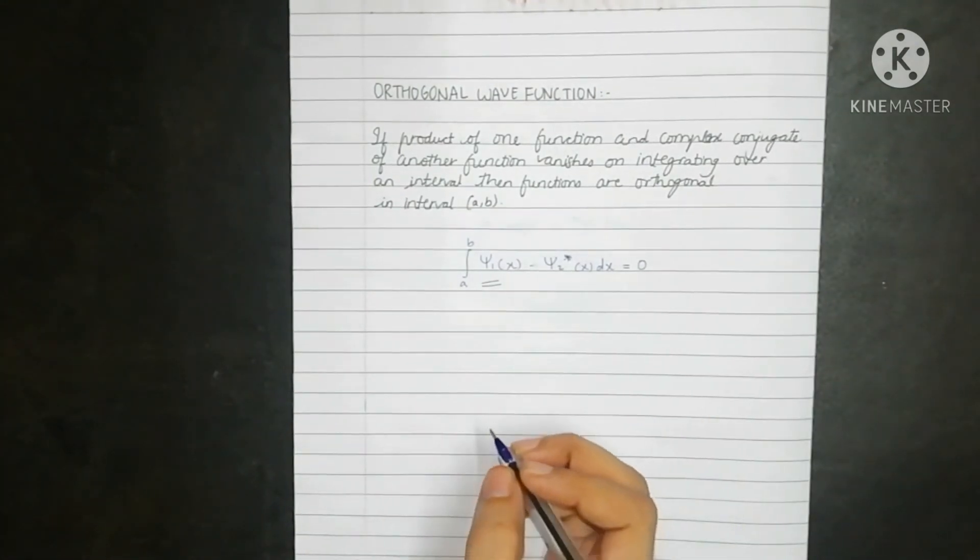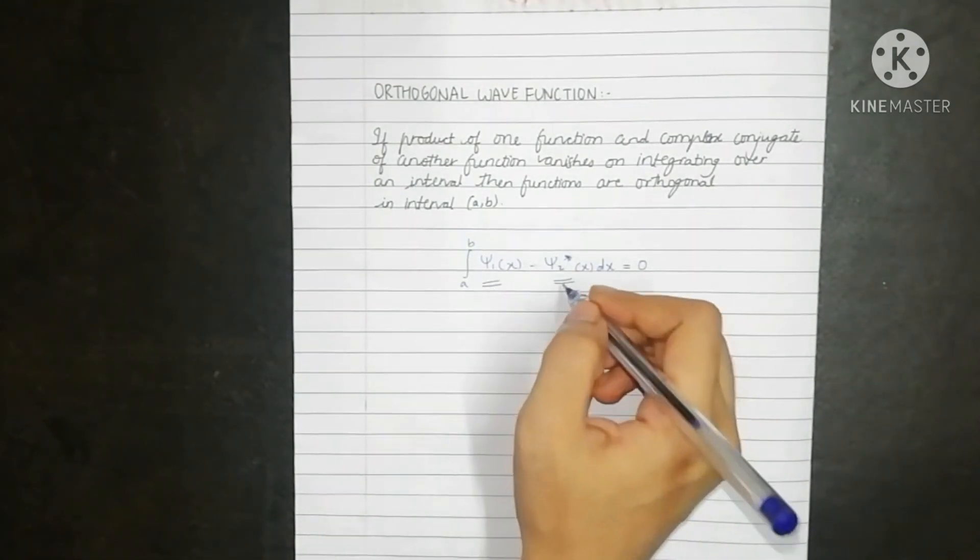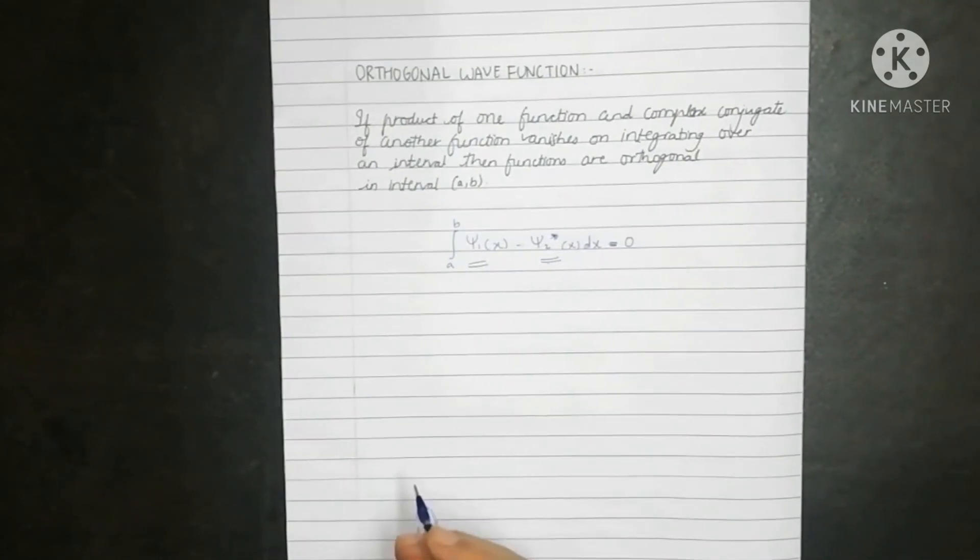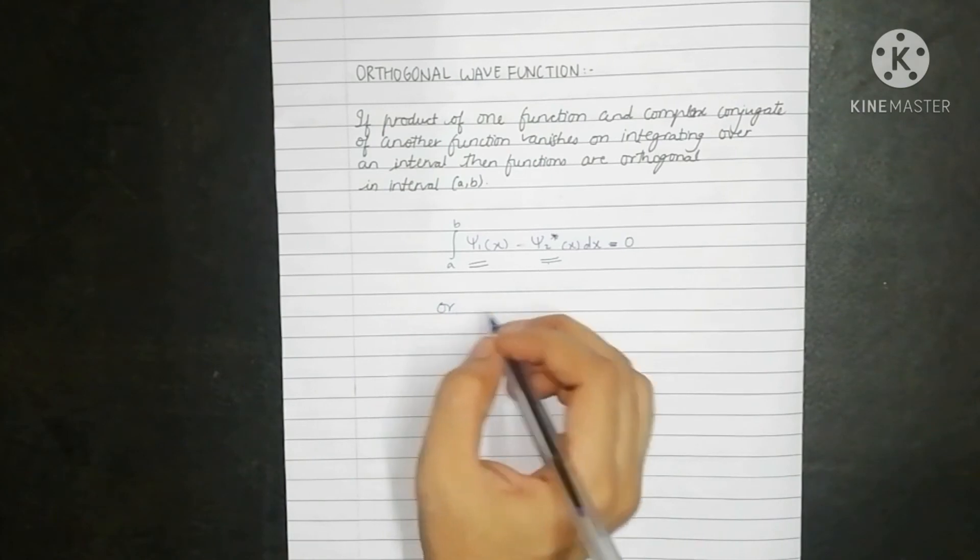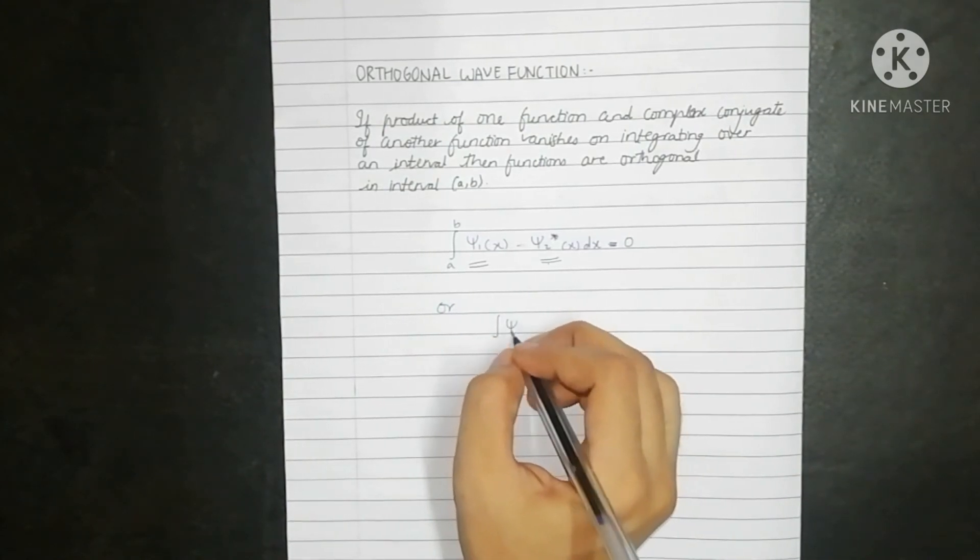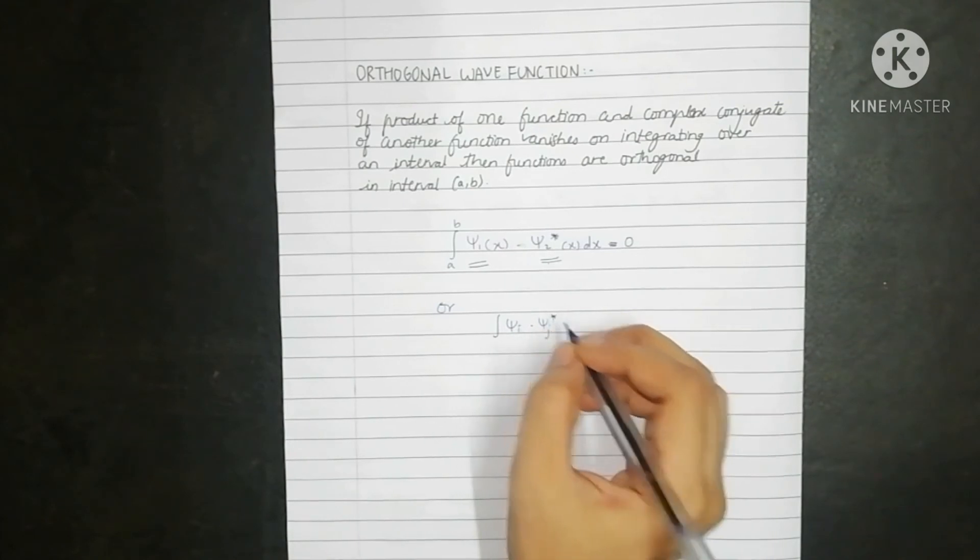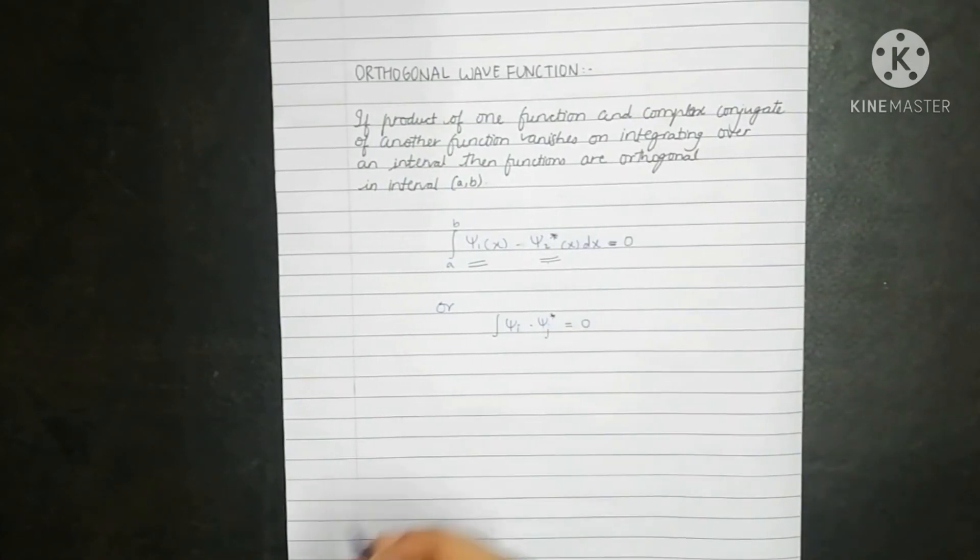Psi 1 was the first function and psi 2 was the another function. The product of both the functions gives us 0. This can also be written as integration of psi i into complex conjugate of psi j is going to be 0.